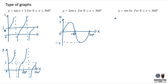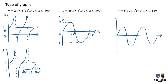If it's sin 2x, it means 2 cycles. 2 cycles means this is 1 cycle and this is the second cycle. The minimum is negative 1 and the maximum is 1. This is 360 degrees and this will be 180 degrees. Add y label and x label.